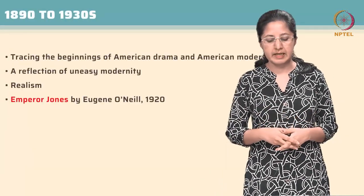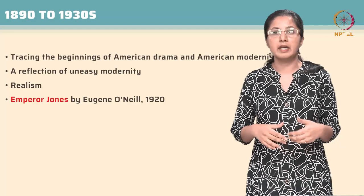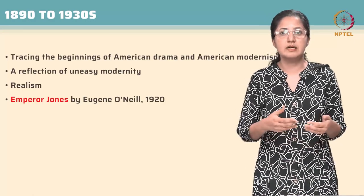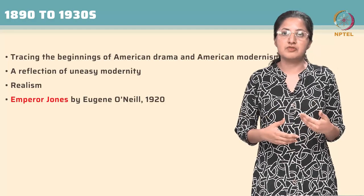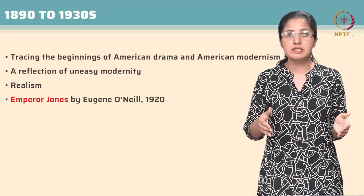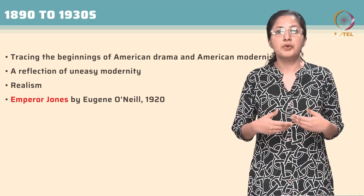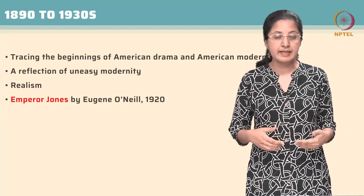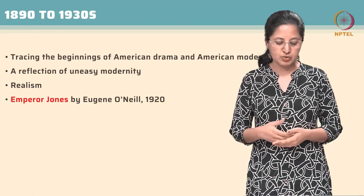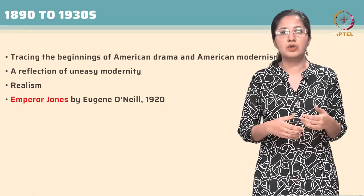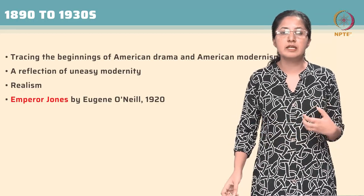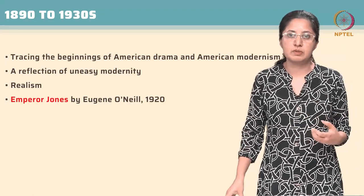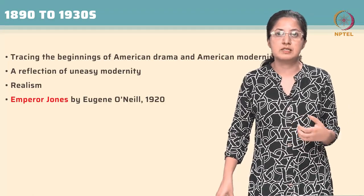We begin by tracing the beginnings of American drama, looking at how American modernism gets represented in contrast to British and European modernism, and how this uneasy modernity becomes a site for American drama to flourish. We look at the period from 1890 to the 1930s to understand how realism emerges as a very strong trope, with one of the earliest and most significant works being Emperor Jones by Eugene O'Neill — a play which looks at the complexities of race and individualism in the early 20th century, covering aspects still relevant in contemporary discussions on race and modernity.